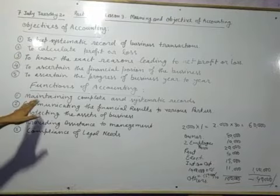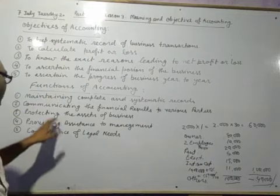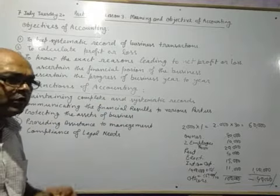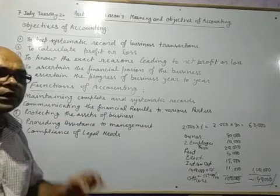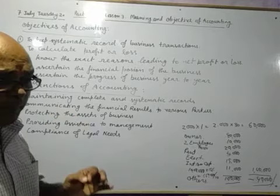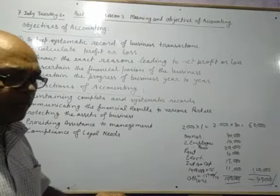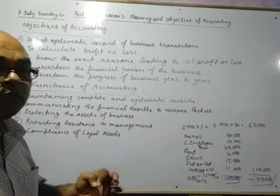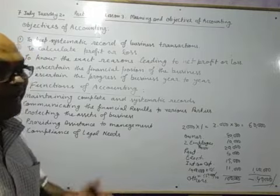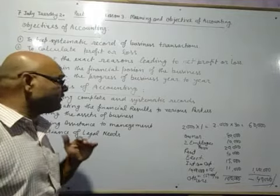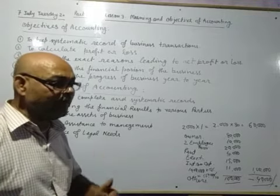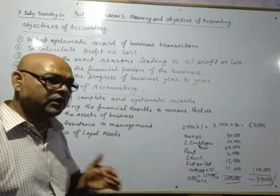Next is the functions of accounting. What are the functions of accounting? First: maintaining complete and systematic records. It is the law of accounting that every transaction is recorded in the book. Even if the businessman pays 5 rupees, he will at once record this 5 rupees — first he will record, then he will pay. Each transaction is recorded in a systematic way, in a sequence, in the same order in which it occurred.